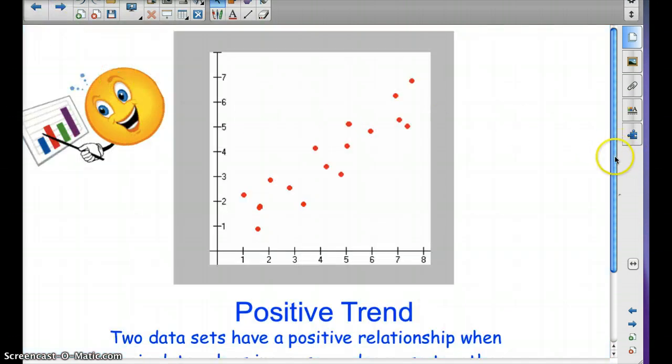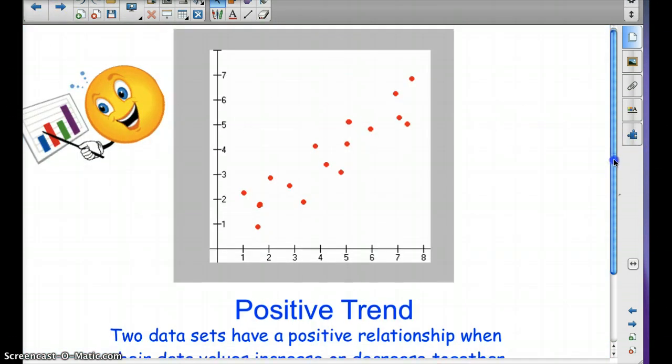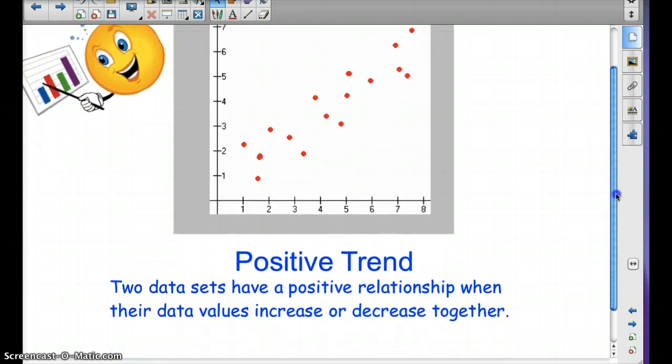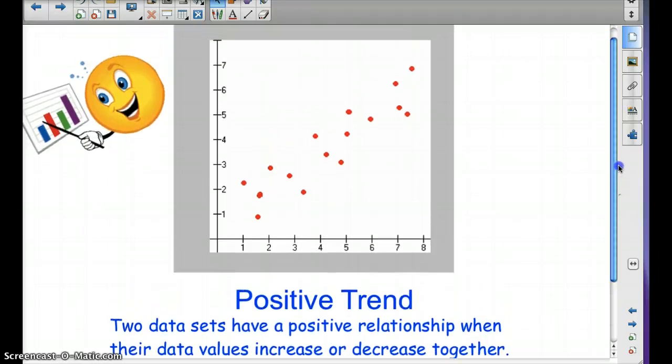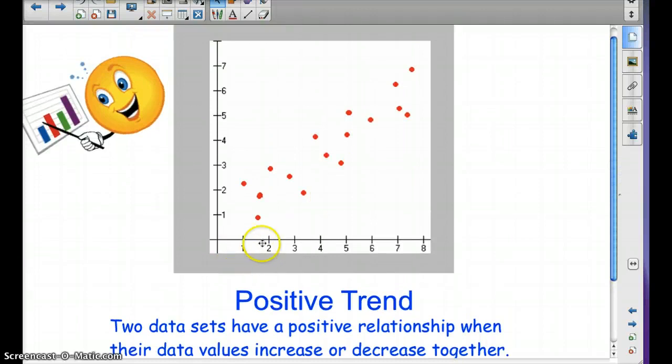Here's a scatter plot, and this scatter plot has a positive trend. Two data sets have a positive relationship when their data values increase or decrease together. Notice our x values as they go up, the y values go up as well. We have a positive trend.